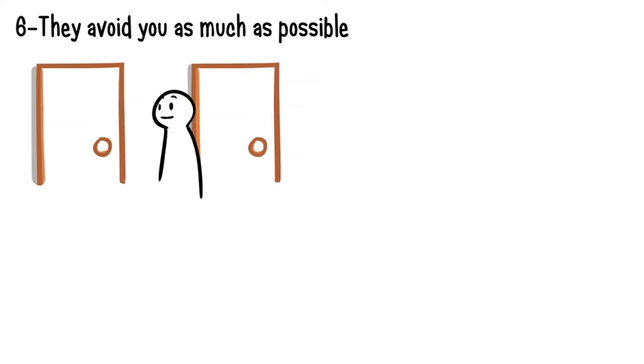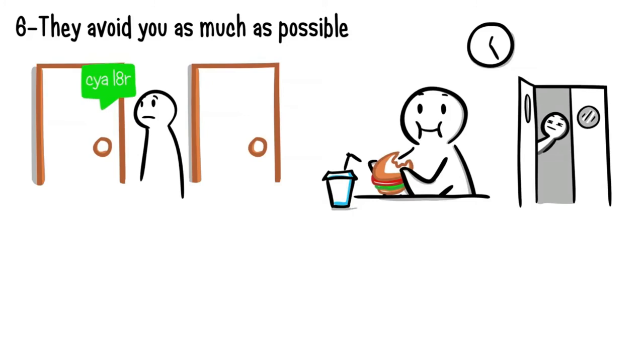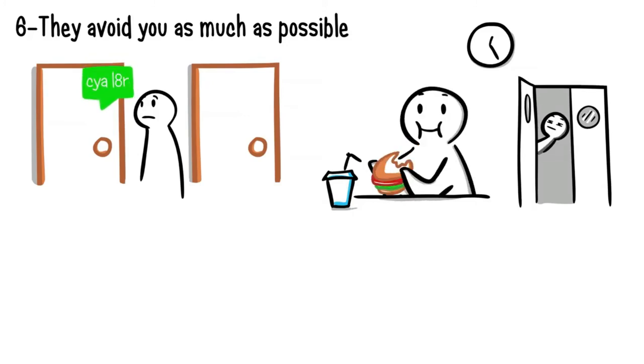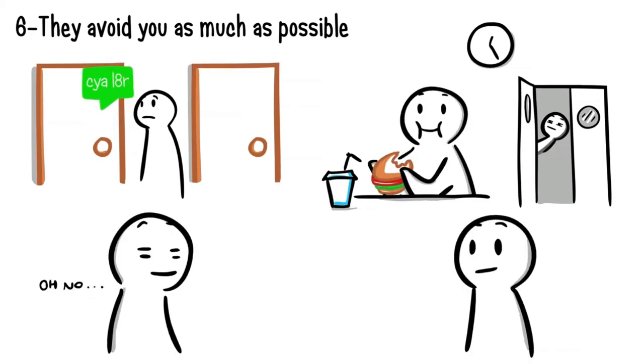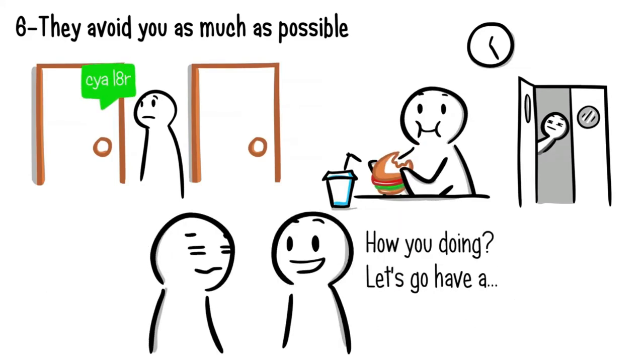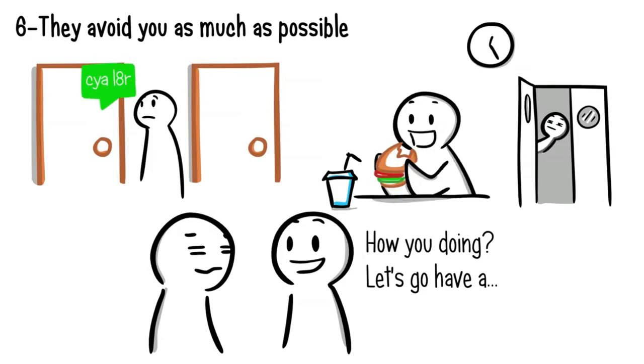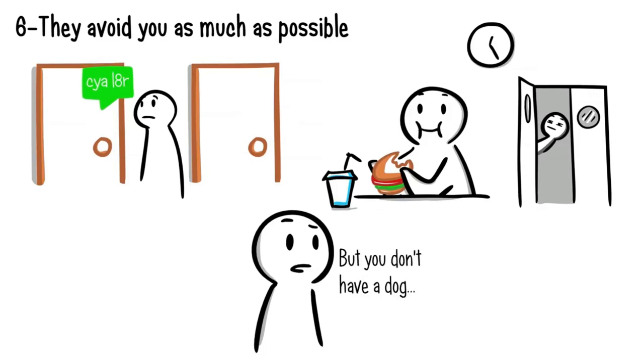Number six, they avoid you as much as possible. Do they live or work in close proximity to you, but limit communication to emails or text messages? When someone secretly dislikes you, they will do whatever it takes to have minimum contact with you. It's especially a sign if they find out your schedule just to avoid you during your lunch hours, or time you need to occupy the same space. And when you do end up bumping into one another, they'll always have an excuse ready at hand to avoid seeing you again.